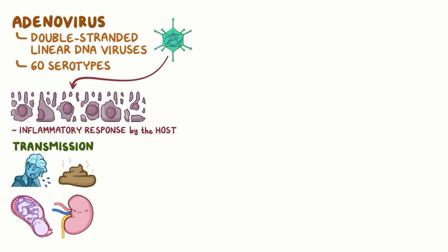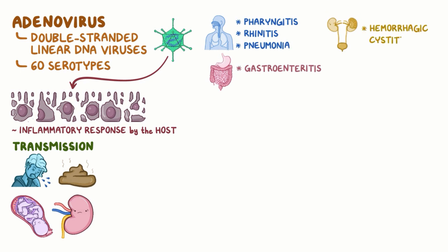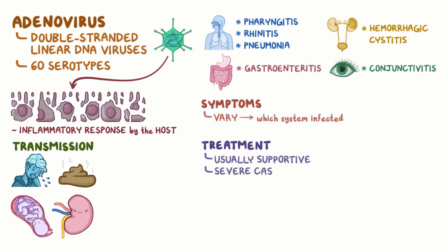It can affect the respiratory system, causing pharyngitis, rhinitis, and pneumonia, the gastrointestinal system, causing gastroenteritis, the genitourinary system, causing hemorrhagic cystitis, and the eyes, causing conjunctivitis. Symptoms vary based on which system is infected. Treatment is usually supportive, except in severe cases or for immunocompromised individuals when antivirals and immunotherapy might be given.